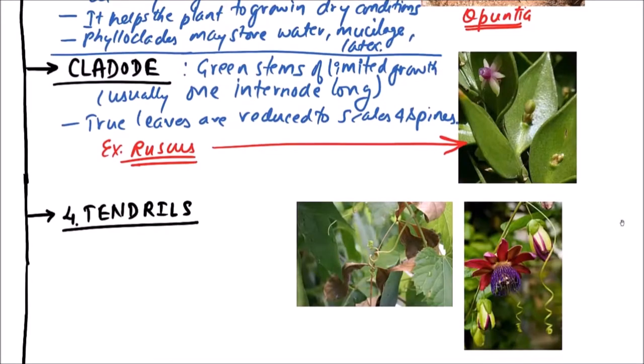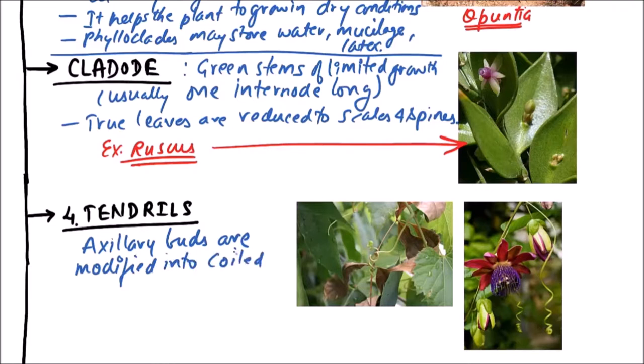Now the next is tendril. Such plants cannot climb up on their own. So axillary buds are modified into coiled structures which are wiry and also thin. So coiled wiry and thin structures for support.